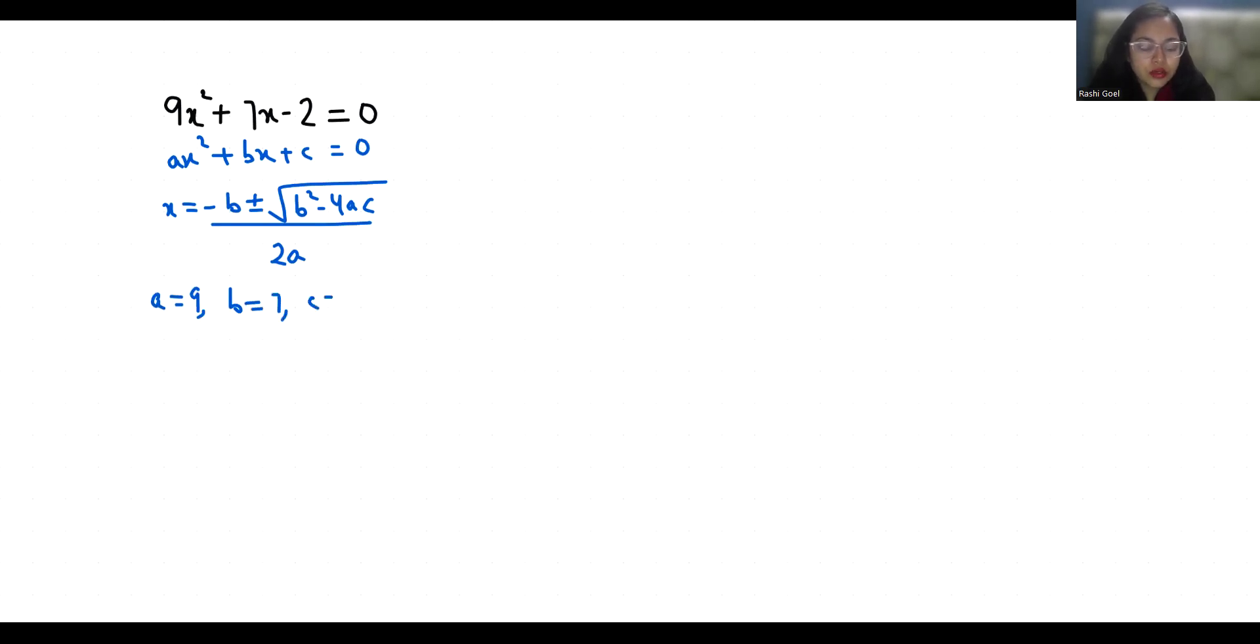So x = (-7 ± √(7² - 4(9)(-2))) / (2(9)). So -7 ± √(49 + 4 times 9... 36 times 2 is +72) / 18.